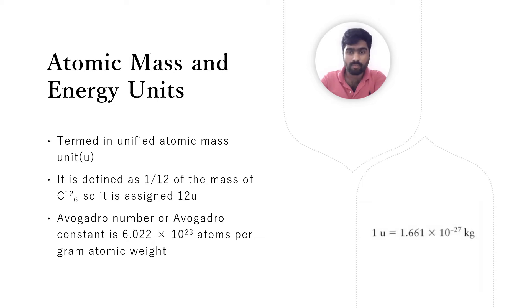It is defined as one-twelfth of the mass of a carbon atom, so it is assigned as 12 U. Now we are coming to another important constant called Avogadro's number. It's a constant that doesn't change. It is defined as 6.023 times 10 to the power 23 atoms per gram atomic weight.